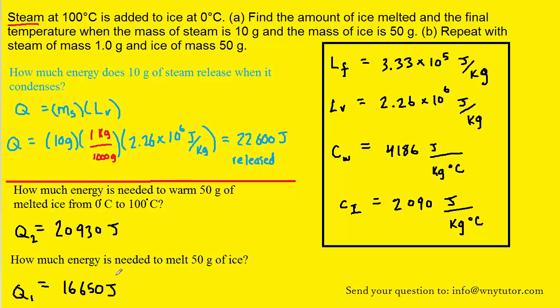Now again, this is how much energy is being released as the steam condenses. Let's recall that it costs 16,650 joules to melt the ice and then an additional almost 21,000 joules to warm up the melted ice to 100 degrees Celsius. We certainly have enough energy here being released to accomplish fully the first part of the process. This only requires about 17,000 joules. We've got 22,600 being released, so we can certainly use that released energy to accomplish the first process, which is the melting of the ice. But there's not going to be enough energy left over to completely warm up the melted ice from 0 to 100.